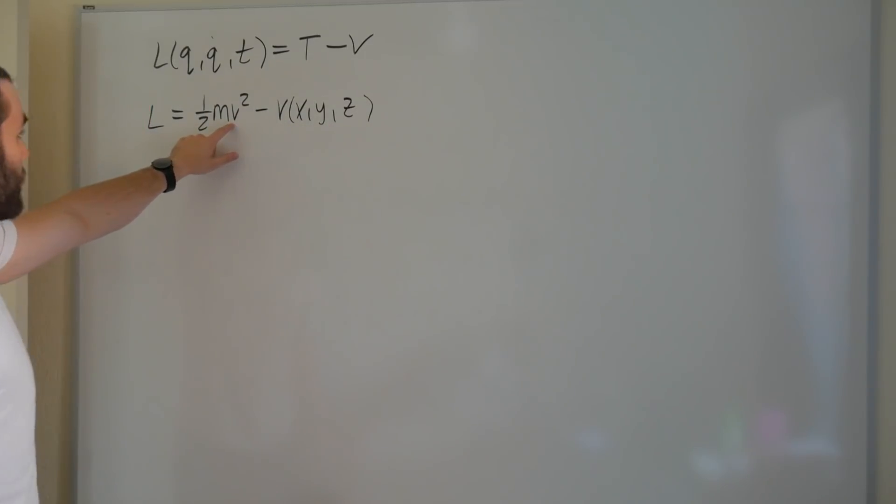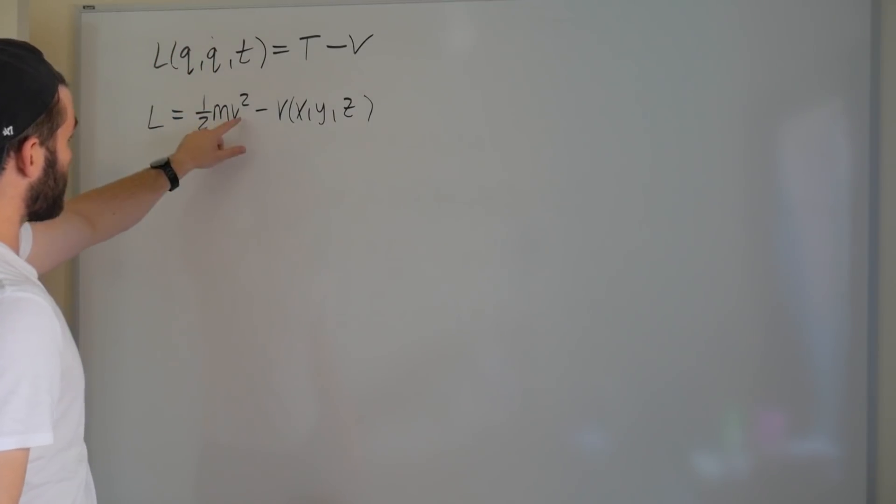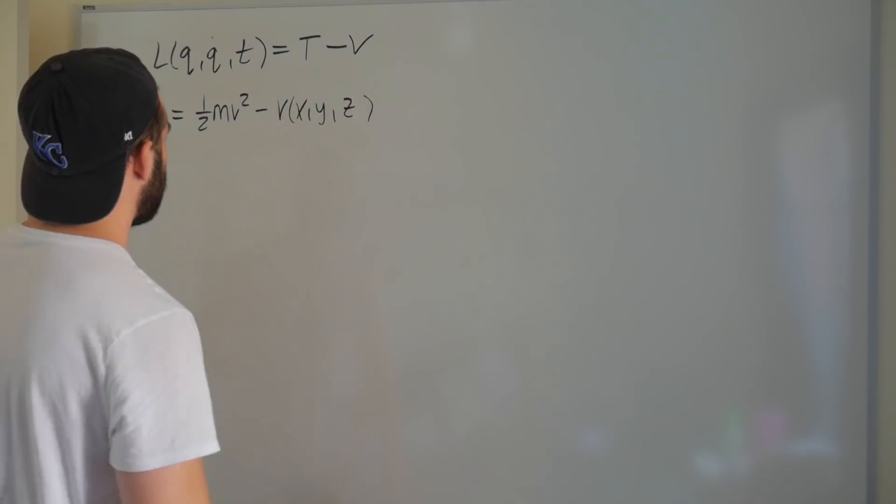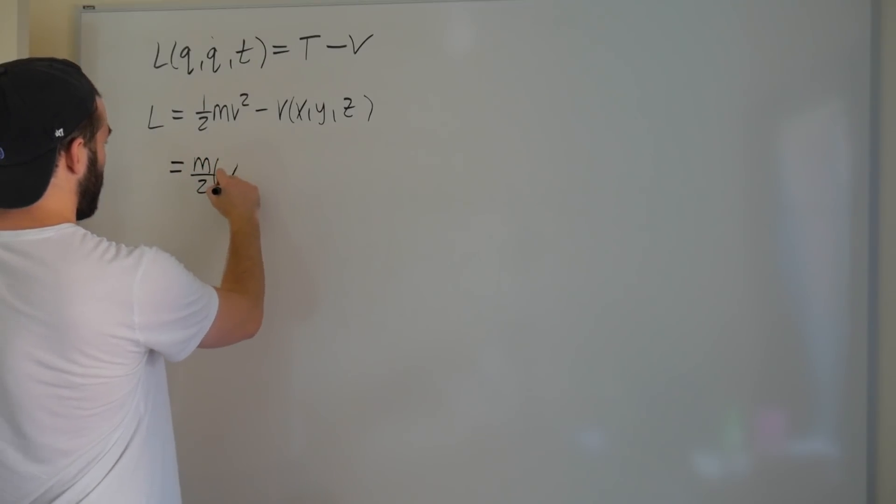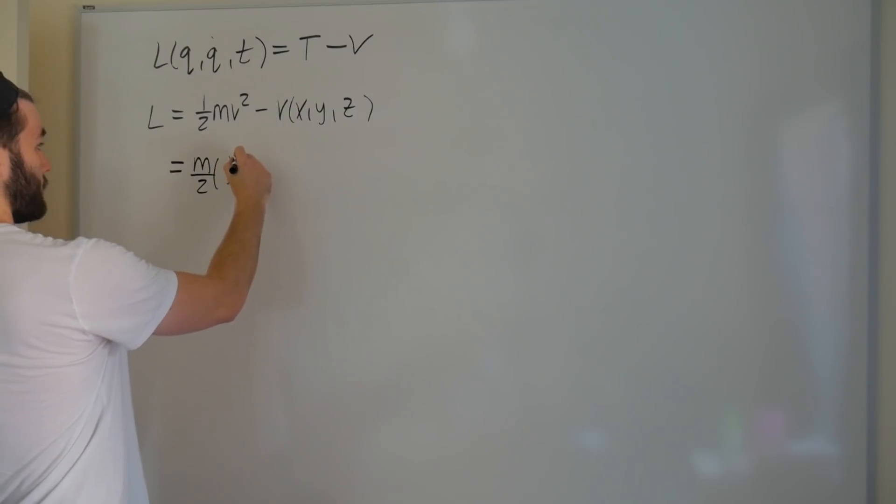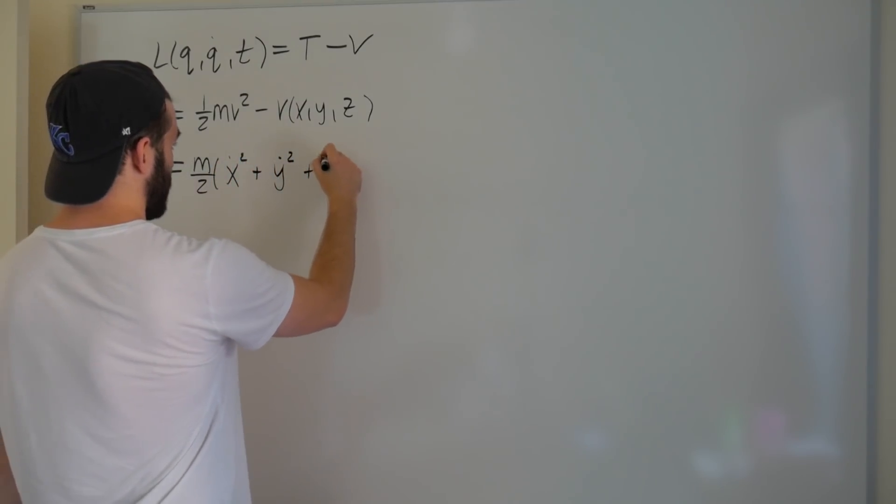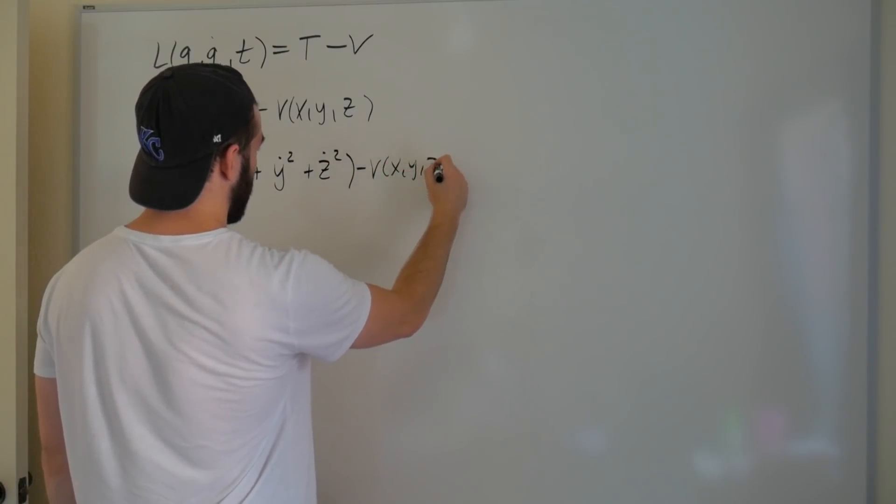That means that we don't want this v to be hanging around. We want it in terms of the time derivative of our generalized coordinates, which means time derivatives of x, y, z. So let's go ahead and expand this real quick, which tells us that this can be written as m over 2 times x dot squared plus y dot squared plus z dot squared minus V of x, y, and z.